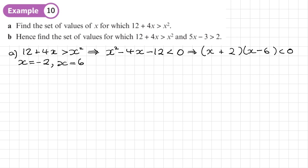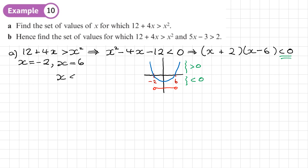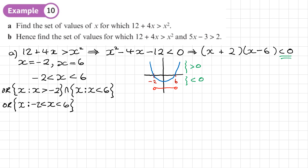I'll draw a sketch — 6 and negative 2 on the axis, just a sketch so it's not to scale. It's a U-shape quadratic. This is less than 0, so I want the bit below the axis. That gives x between negative 2 and 6, so greater than negative 2 and less than 6. In set notation this can be written using the intersect symbol, or as a single bracket with the complete inequality.